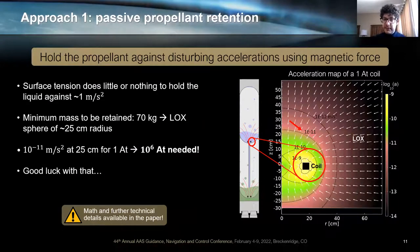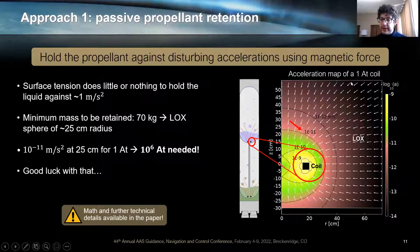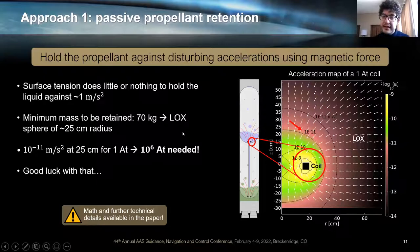So the first approach that we explore is the brute force one, which basically consists of holding the propellant against disturbing accelerations using magnetic forces. We have computed that the stage separation acceleration is of the order of one meter per second squared. And we need at least 70 kilograms of liquid oxygen for the second stage. That means that we need to hold a sphere of liquid oxygen of more or less 25 centimeters radius. If we take a one ampere-turn coil and simulate the acceleration that this coil asserts on liquid oxygen, we get this plot. In this plot, in the color map, you see the logarithm of the acceleration. And you can see how at about 25 centimeters, the acceleration of this one ampere-turn coil is of the order of 10^-11 meters per second squared.